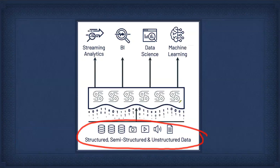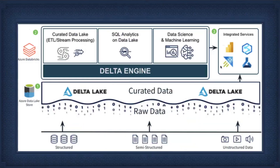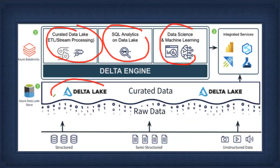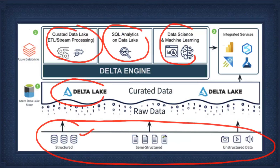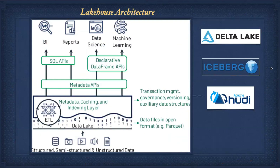In lake house architecture, structured, semi-structured, and unstructured data all reside on the data lake. Delta Lake sits on top and converts everything into structured format, enabling database features for batch processing, streaming, BI, data science, and machine learning — with a metadata catalog as well. The competitors to Delta Lake are Apache Iceberg and Apache Hudi. By default in Databricks you get Delta Lake; outside Databricks you can use Iceberg.